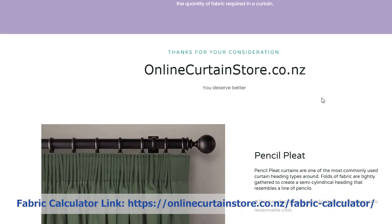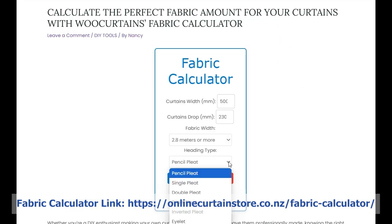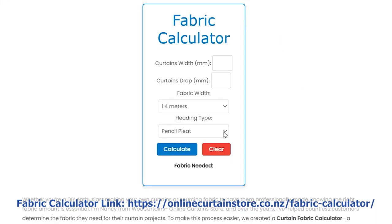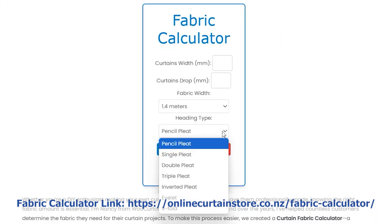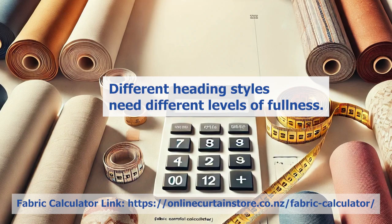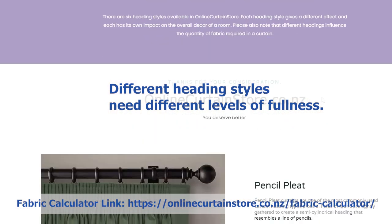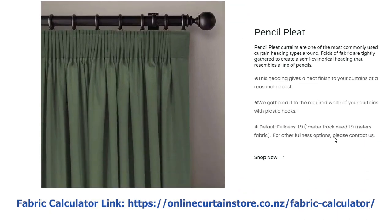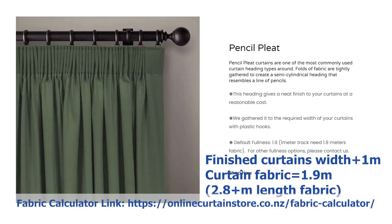Step 3: Choose your curtain heading style. Select your curtain heading style — we have options for various fullness ratios: pencil pleat, single pleat, double pleat, triple pleat, inverted pleat, eyelet, and S-fold. Each style affects how much fabric you'll need. For example, if you choose a pencil pleat with a gathered width of 1 meter, you'll need approximately 1.9 meters of fabric in width if you choose wide length fabric.